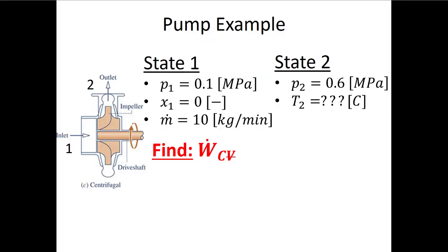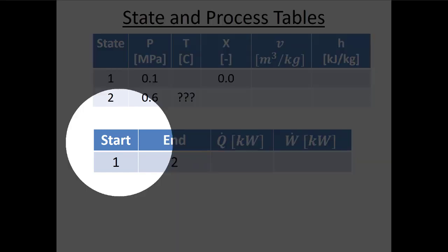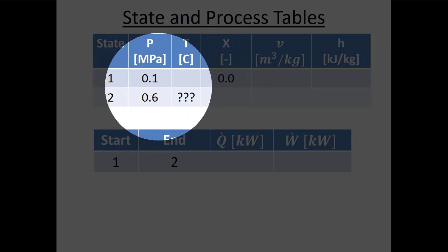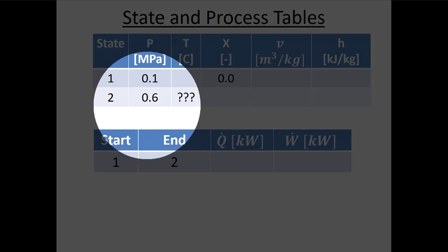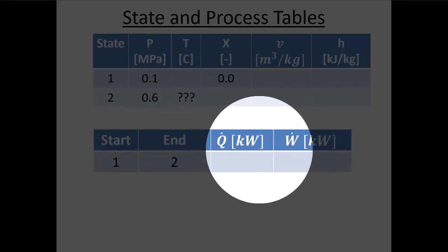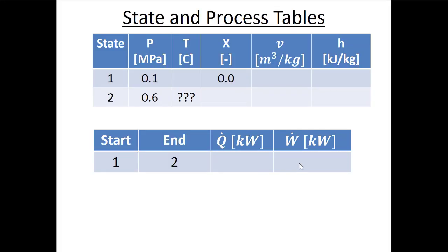Pumps have to be plugged into the wall — you get electrical energy, which you turn into mechanical energy via a spinning shaft, which pressurizes the liquid running through the pump. Drawing a state and process table: at state 1, I know pressure and quality, so I'll assume it's a saturated liquid at 0.1 MPa (one bar). At state 2, the pressure is 0.6 MPa but I don't have another piece of information. For the process table, there's some heat transfer and some rate of work. Since this is a pump, work is going in, so I expect the power to be negative.